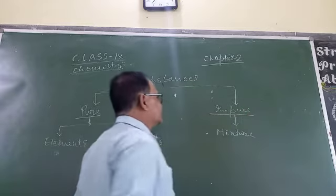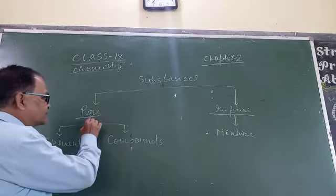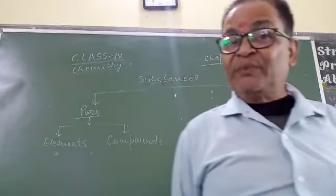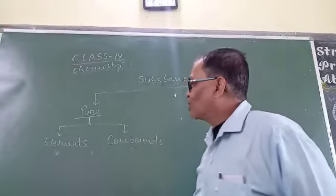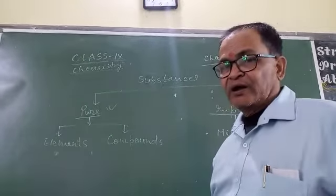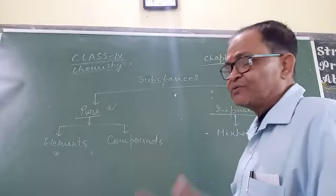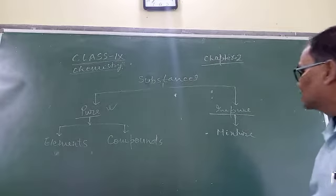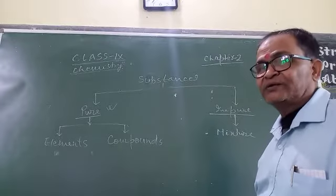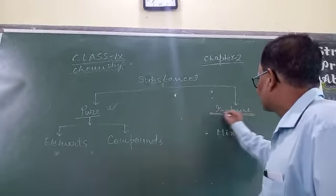The substances made up of same kind of particles, that is similar particles, are called pure substances. And on the other hand, the substances made up of two or more different types of particles are called impure substances.